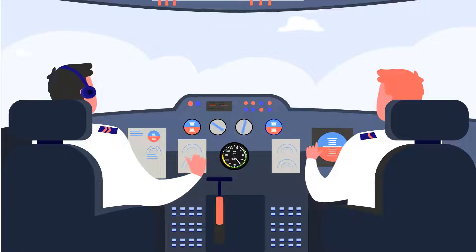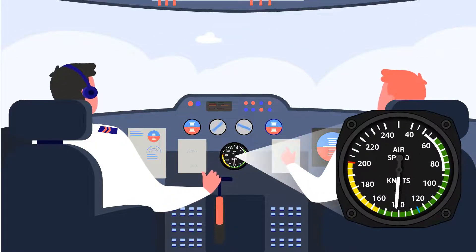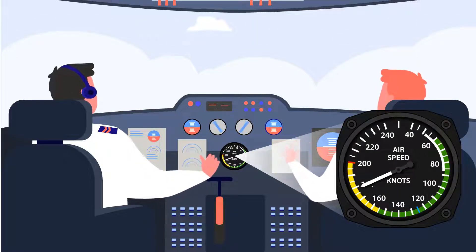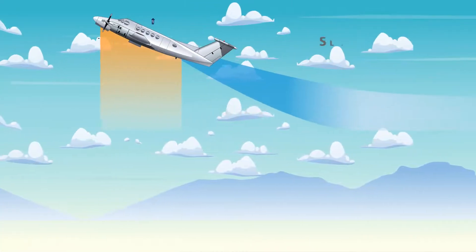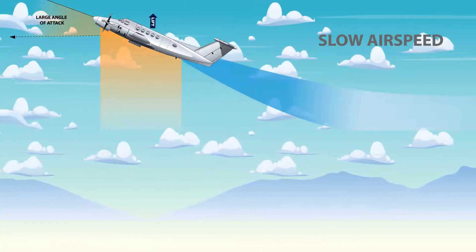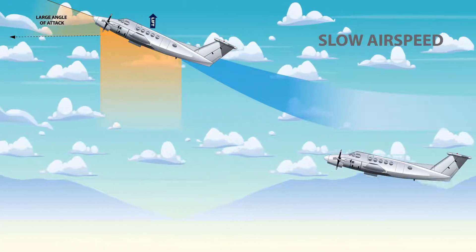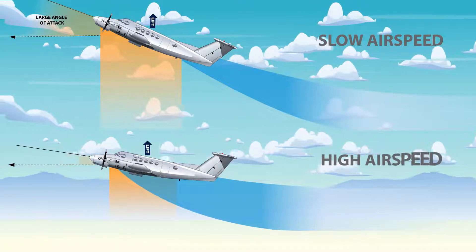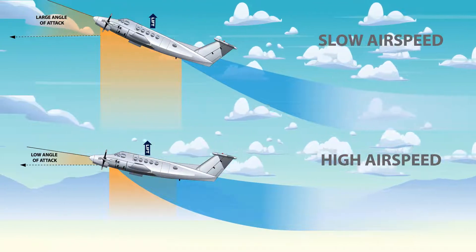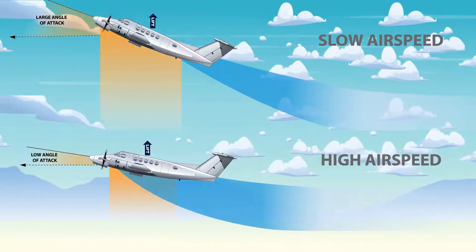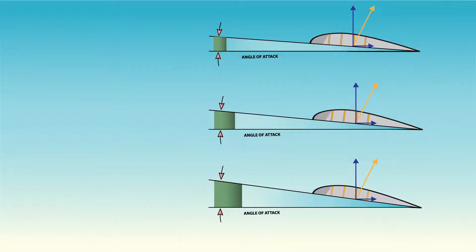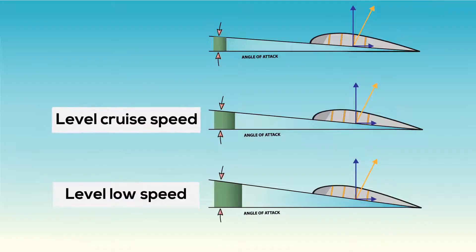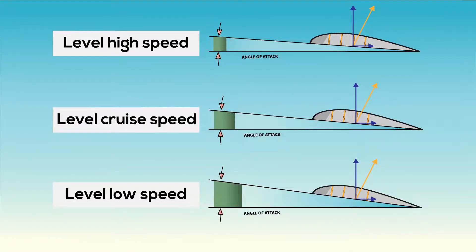Did you know straight and level flight can be accomplished at many different airspeeds? Lift varies with the angle of attack and airspeed. A large angle of attack with slow airspeed produces the same amount of lift as high airspeed with a low angle of attack. Aircraft speed regimes are grouped into three categories: low speed flight, cruising flight, and high speed flight.